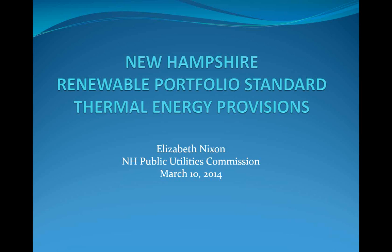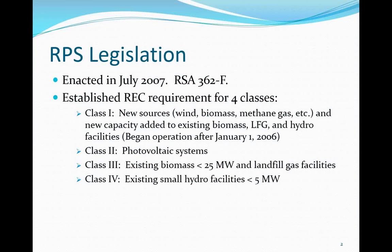Thank you, Warren, Maria, and Joseph. I want to start with a brief background on our Renewable Portfolio Standard legislation. The original legislation was enacted in July 2007 and established four REC classes. Class one is for new sources that began operation after January 1, 2006, and includes wind, biomass, methane gas, and new hydro. Class two is solar PV systems that began operation after January 1, 2006. Class three is existing biomass less than 25 megawatts and landfill gas facilities. Class four is existing small hydro facilities.